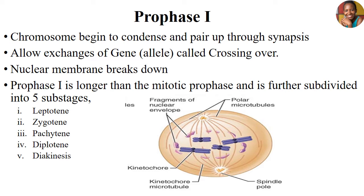Prophase I is said to be longer than the mitotic Prophase, and because of this, Prophase I in meiosis is divided into five sub-stages. These sub-stages are: Leptotene, Zygotene, Pachytene, Diplotene, and Diakinesis. In summary, during Prophase I there will be synapsis, crossing over, nuclear membrane breakage, and establishment of the asters that will produce the microtubules or spindle fibers to help with separation of the homologous chromosomes at the Anaphase phase.